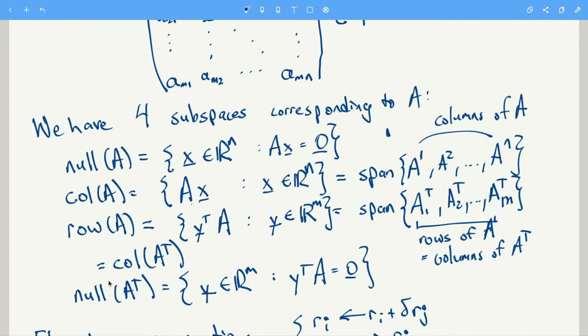And we also have the null space of A transpose, otherwise also known as the left null space.